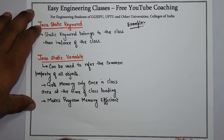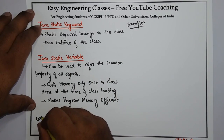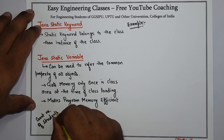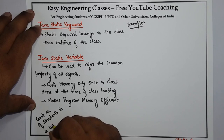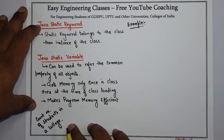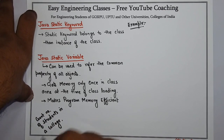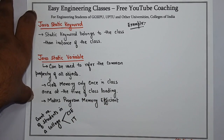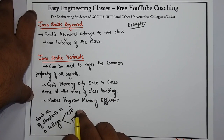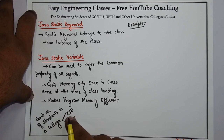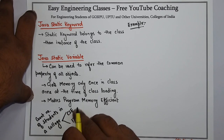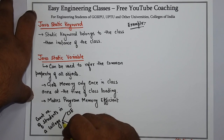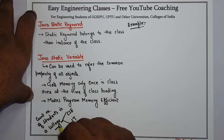Suppose I have to make a program to count the number of students in a college. A college can have different branches like CSC and IT, so I will create two different objects — one is CSC and one is IT. Every time a new object is created, that means a new student has enrolled in the college, and the counter of the college class will get incremented.